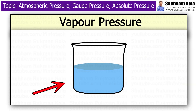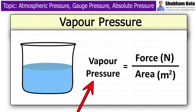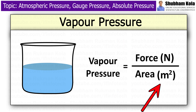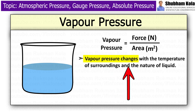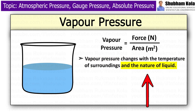Vapour pressure of a liquid solution is the amount of pressure that the vapours exert on the liquid solvent when they are in equilibrium at a certain temperature. The vapour pressure is equal to force divided by area, where force is measured in newtons and area is measured in square meters. The unit of vapour pressure is Newton per meter square, or Pascal. Vapour pressure changes with the temperature of surroundings and the nature of the liquid.